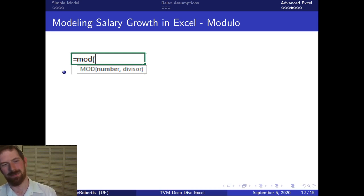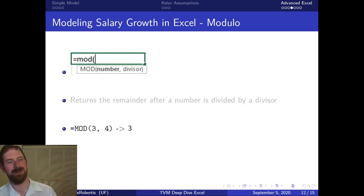So the modulo is basically just the remainder of doing division. If you think about three divided by four, what's the remainder? The remainder is three. That's what this MOD function is doing, just giving you the remainder of a division.